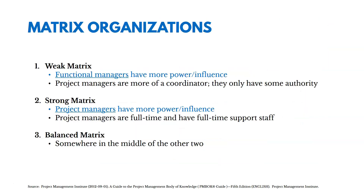Here are the different types of matrix organizations: weak, strong, and balanced. The weak matrix is where the functional managers have more power. The strong matrix is where project managers have more power and influence. The way I remember this is that this textbook is written by the Project Management Institute, and they think project managers have a strong matrix where PMs have more power and influence.